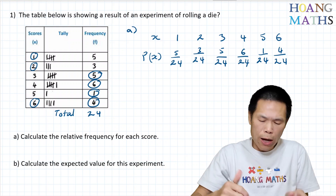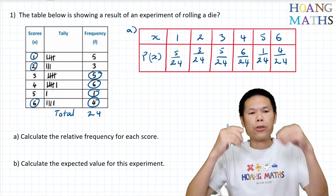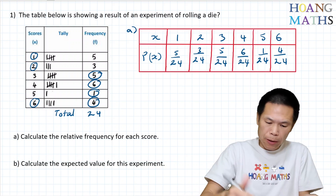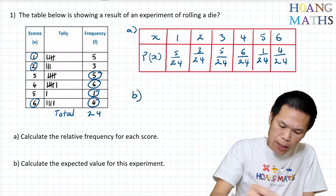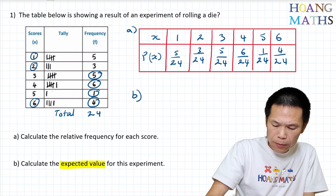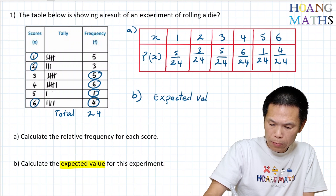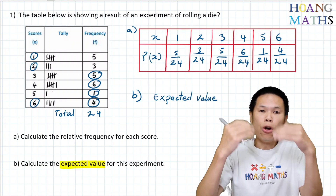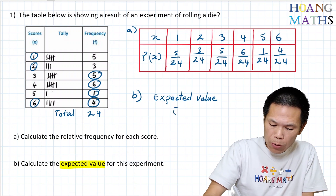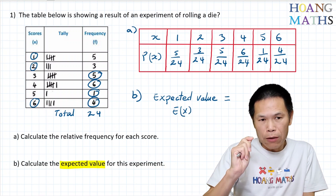Let me draw out the table. There you go. Now part B: work out the expected value. The notation for expected value is E(X). So to work out the expected value, we use the score and multiply it by its probability.